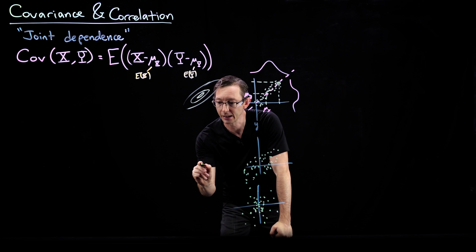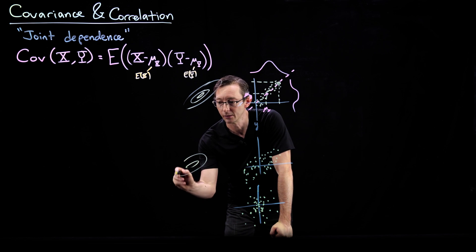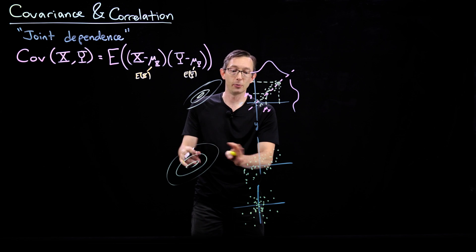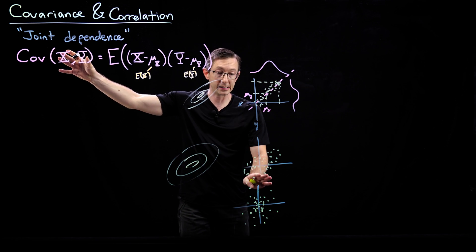If I have a slightly lower slope and a slightly wider distribution, fatter and less slope, this will be a lower covariance of x and y.